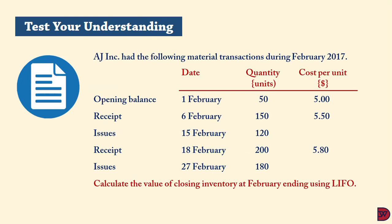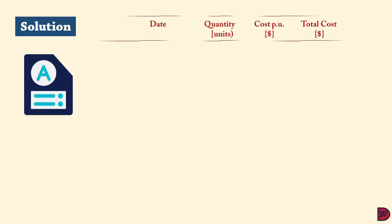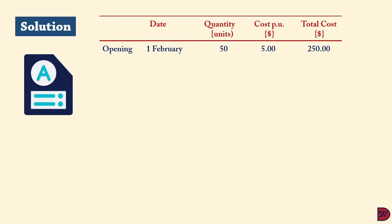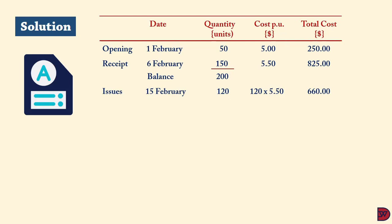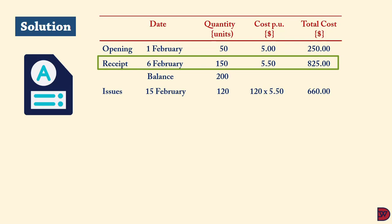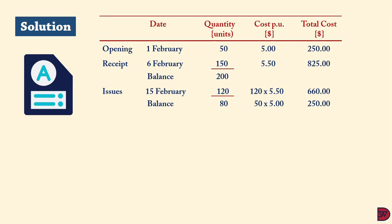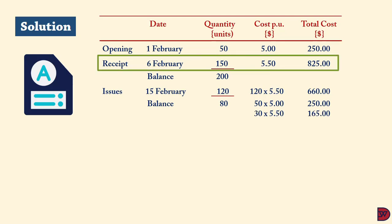Using the same AJ Incorporated example with LIFO: opening 50 units at $5.00 = $250; receipt on 6 February of 150 units at $5.50 = $825; balance = 200 units. On 15 February, issuing 120 units — unlike FIFO, we exhaust the latest stock first: 120 units from the 6 February receipt at $5.50 = $660. Balance remaining: 80 units — opening 50 at $5.00 and 30 remaining from 6 February at $5.50.